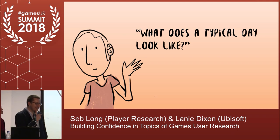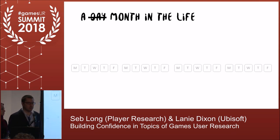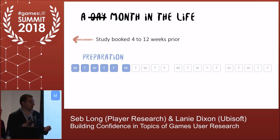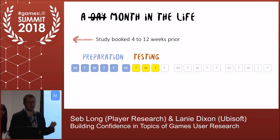So you got yourself a job — what are you doing? What does a typical day look like? A day in the life fluctuates a bit since we're working on projects that last between about 3 to 15 days, so it's more meaningful to look at a month in the life. Projects are broken into three stages: individual studies are booked maybe four to twelve weeks in advance. The first few days are preparation tasks, then testing tasks — the actual days when player testers attend — and lastly reporting, analysis, and construction of deliverables.